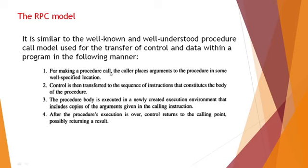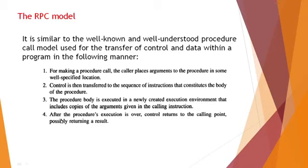The first step is the caller places all the arguments of the procedure in a specified location. Second, control is then transferred to the sequence of instructions that form the body of the procedure and the body is executed. Third, a new execution environment is created with those arguments. Fourth, after procedure execution is completed, control returns to the calling point and the result is also returned. These are the four steps in the RPC model.